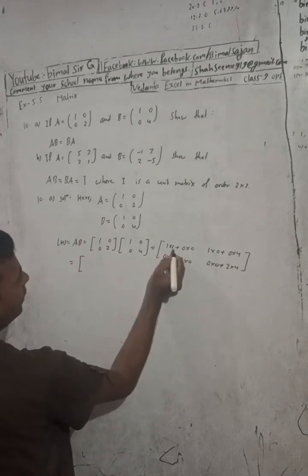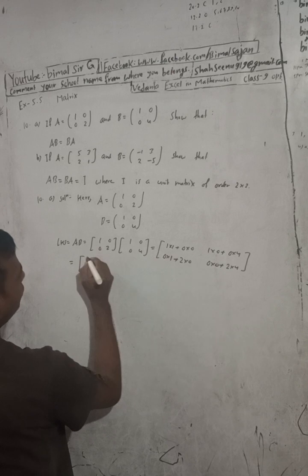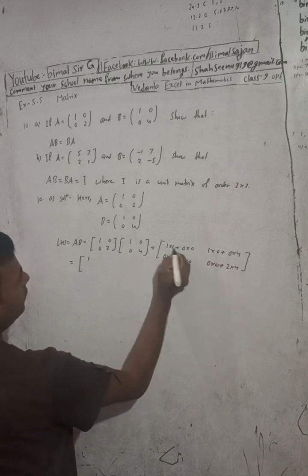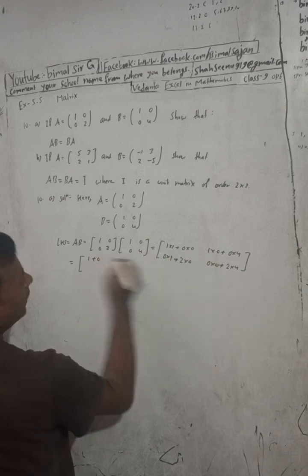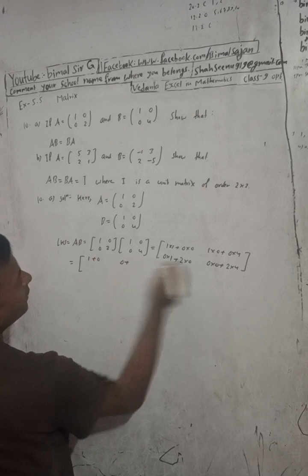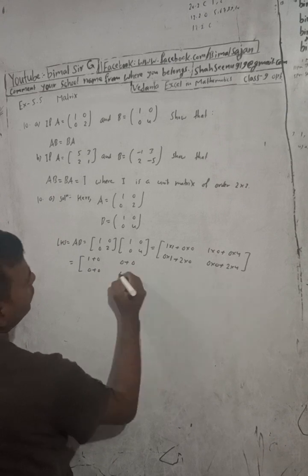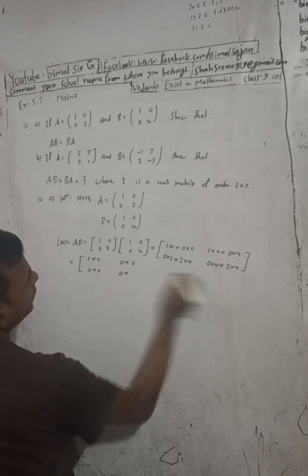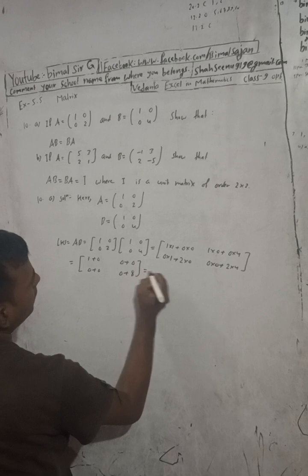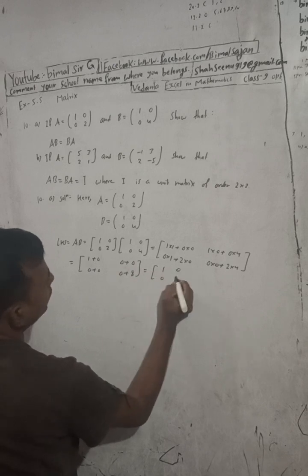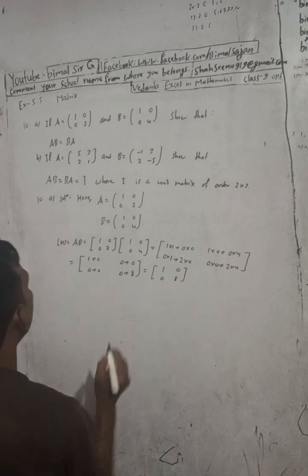So we get: 1 into 1 is 1 plus 0 gives 1. Then 1 into 0 plus 0 into 4 gives 0. Then 0 into 1 plus 2 into 0 gives 0. And 2 into 0 plus 0 into 4 gives 8. So we got [1, 0; 0, 8]. Now let's find BA.